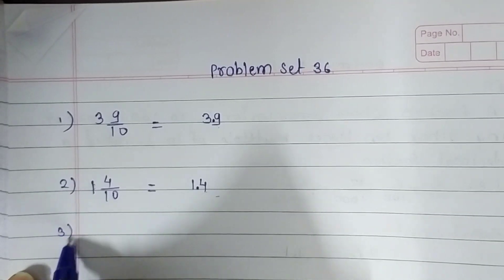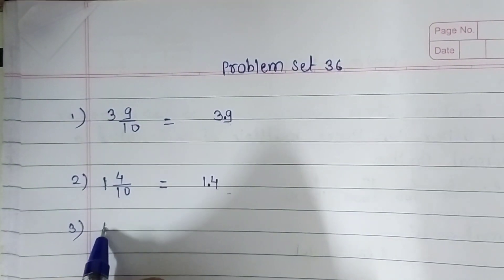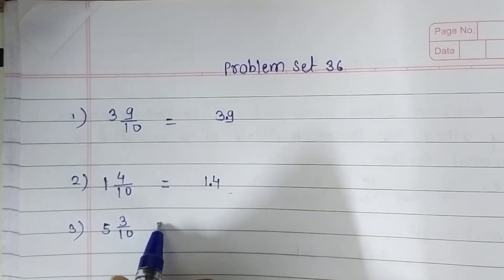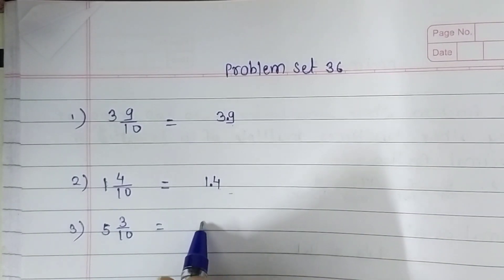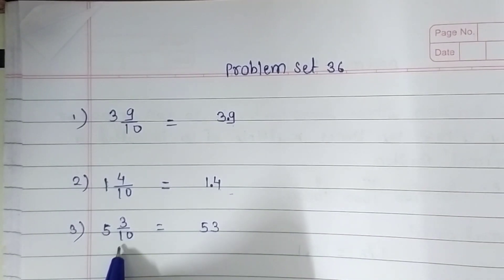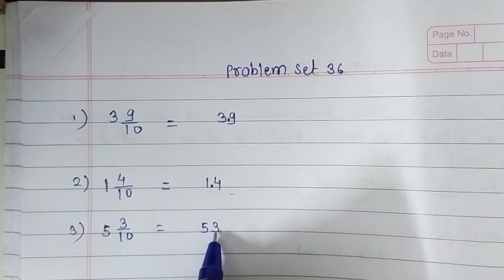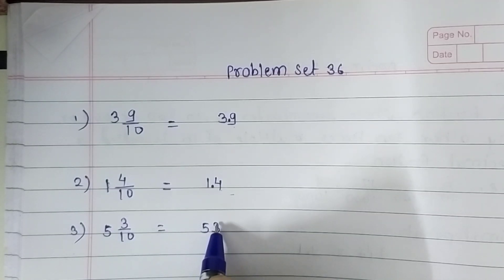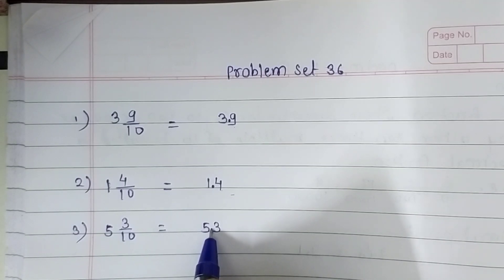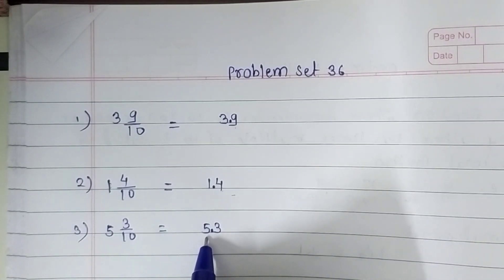The third question is 5 and 3 upon 10. Here 5 is our whole number and 3 is our numerator. Just ignore the denominator and write these two numbers together. Look at the denominator — it has only one zero, so we leave one place from our right-hand side. 3 is on that place, so we leave it and place a decimal point before it. Our decimal fraction is 5.3, and the reading of this decimal fraction is five point three.